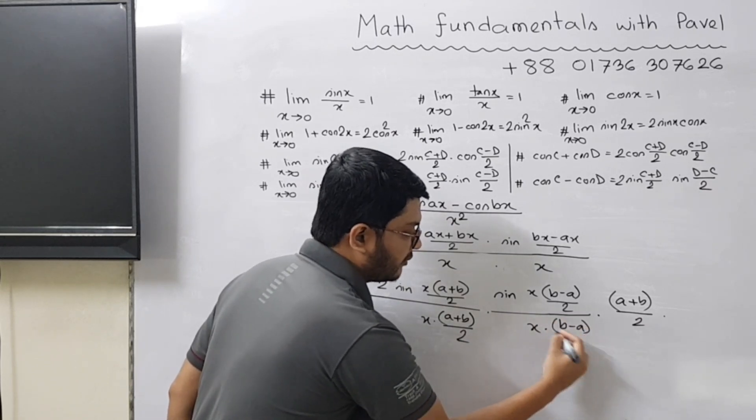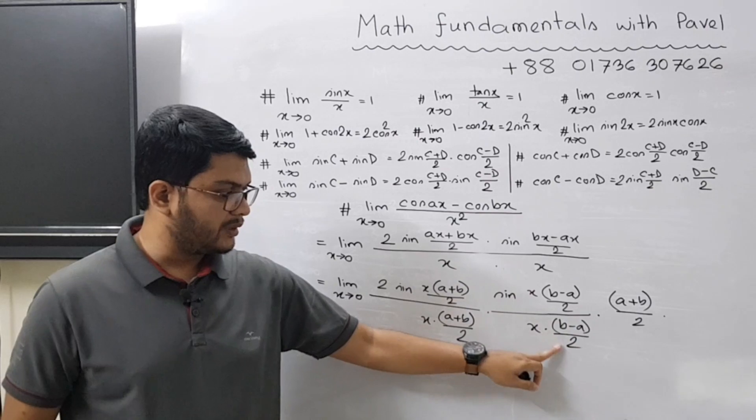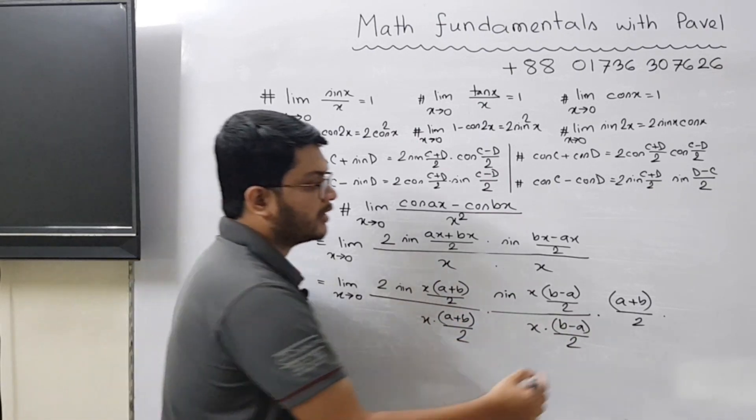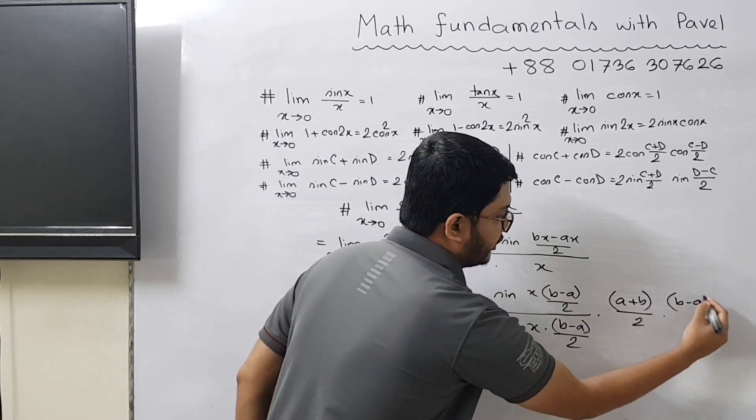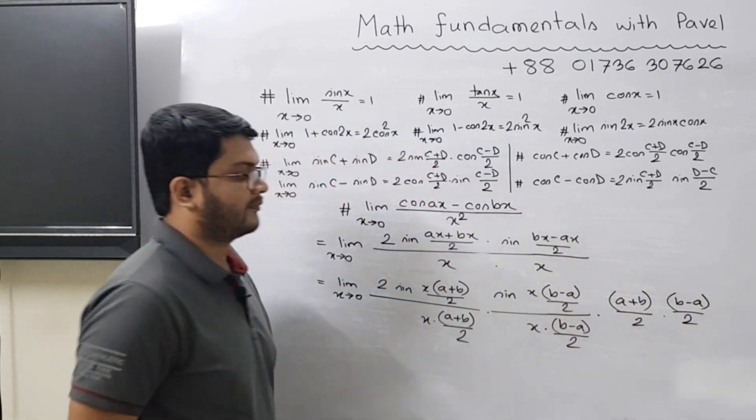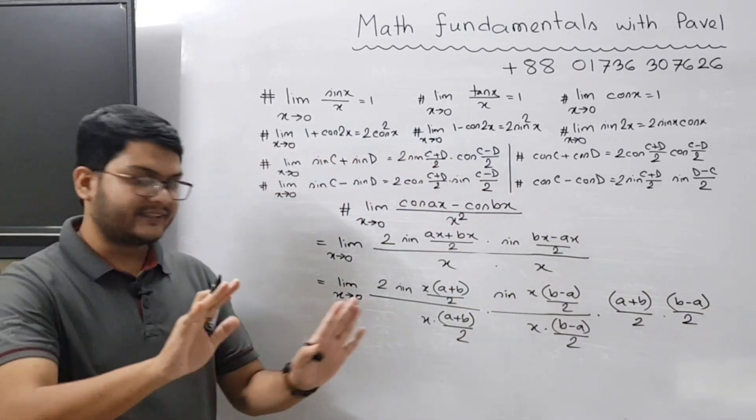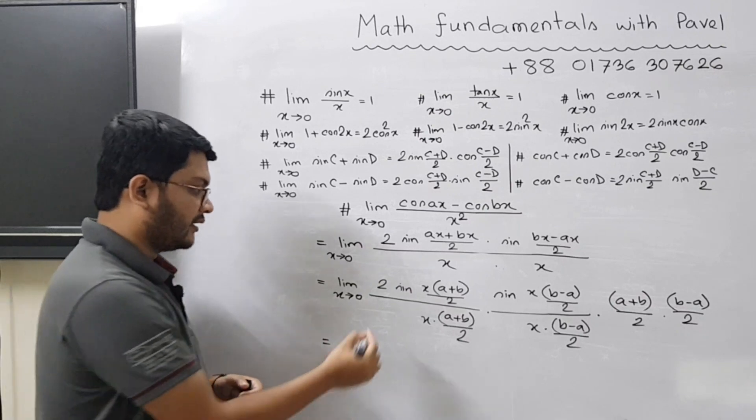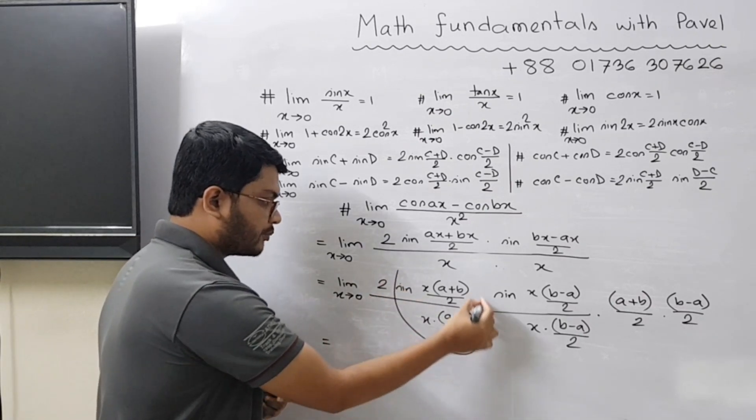b minus a by two. So you divided this part with b minus a by two. That's why you should multiply this part with b minus a by two. So the adjustment is done. Now the next part is very easy.